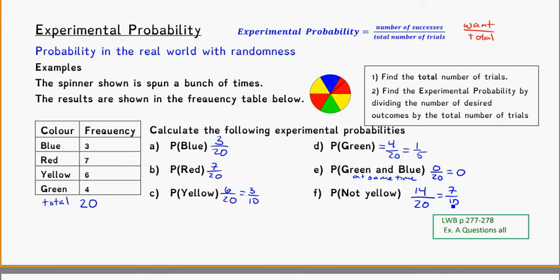So again with the experimental probabilities, sometimes you need to find out what the total is first looking at the frequency table. And then from there you look at the one you were wanting out of how many times you tried it.